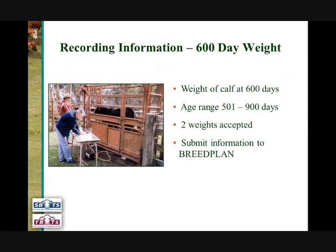The 600 day weight EBVs calculated by breed plan are calculated from the weights of animals collected by seed stock producers when animals are at or around 600 days of age. Breed plan can potentially utilise weights taken when animals are between 501 to 900 days of age.